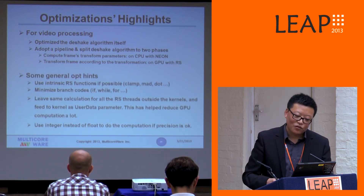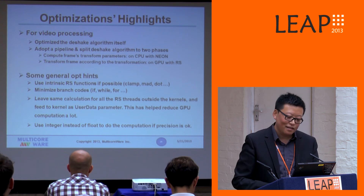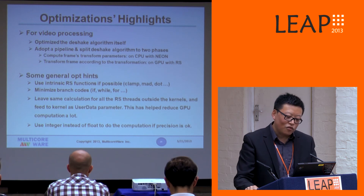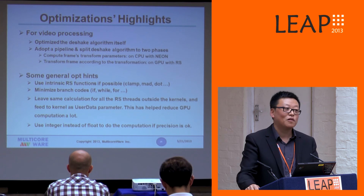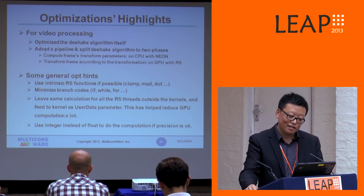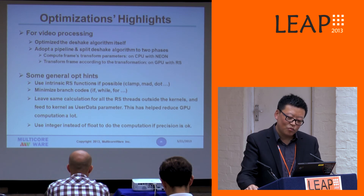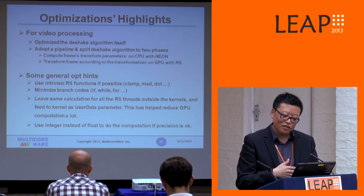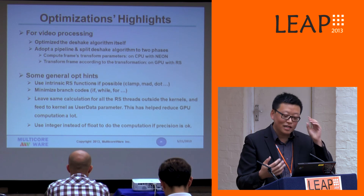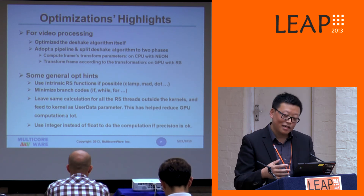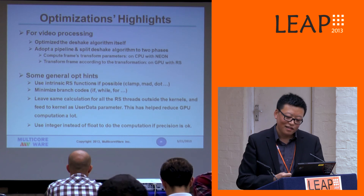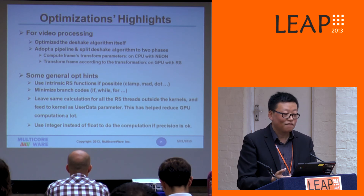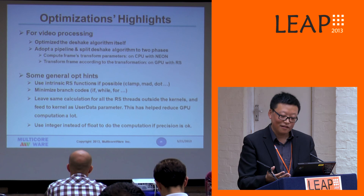I want to share some general optimization hints for anyone interested in this area. Try to use intrinsic RenderScript functions if possible, like color matrix operations — they are very efficient. Try to minimize branch code. If you have some common calculation for all RenderScript threads, do that outside the kernels and pass the result in as kernel parameters. Although the GPU has a lot of power, integer operations are still faster, so try to use more integer operations if possible.